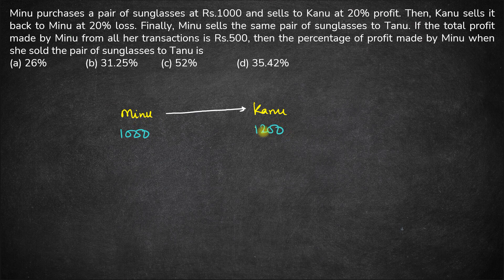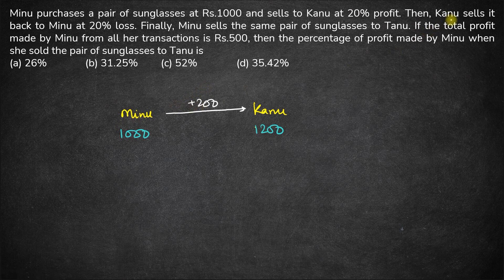Minoo earns a profit of 200 rupees from this transaction. Next, Kanu sells the sunglasses back to Minoo.